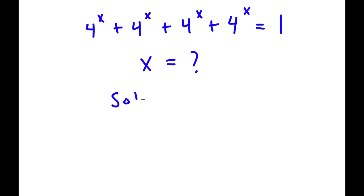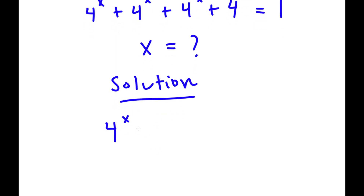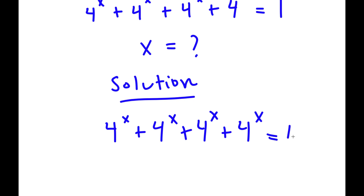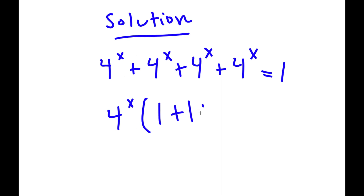For my solution, I start with 4 to the power of x plus 4 to the power of x plus 4 to the power of x plus 4 to the power of x is equal to 1. Because there are four 4-to-the-power-of-x terms on my left-hand side, I'm simply going to factor out 4 to the power of x. So I have 4 to the power of x times — since 4^x divided by 4^x is 1 — I have 1 plus 1 plus 1 plus 1, equal to 1.